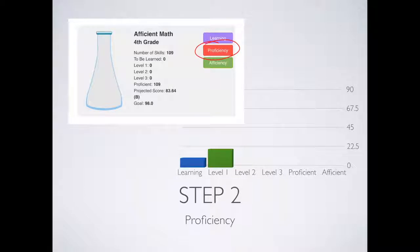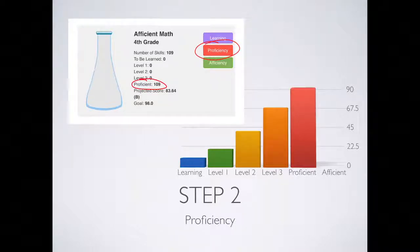Step two is called proficiency. All the skills must be increased to proficient. Each time you answer a skill correctly, that skill will go up one level. But each time you get it wrong, that skill will drop back down and you must correct your mistake in order to bring it back up.